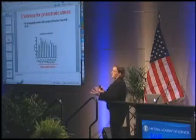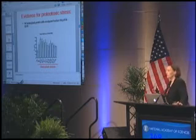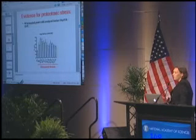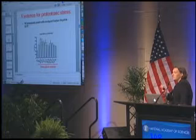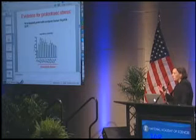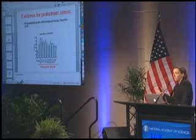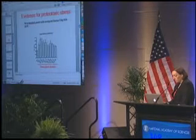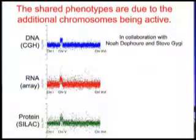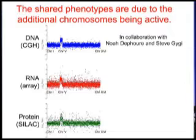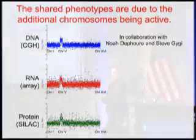This and many other experiments led us to conclude that protein homeostasis is disrupted in these cells. The question that immediately follows is: why? Why do these cells have this particular phenotype? One hypothesis we thought was reasonable to test was that having extra chromosomes — which are active and making additional proteins — causes protein imbalances in the cell, leading to proteotoxic stress.